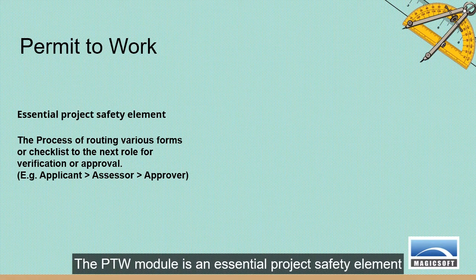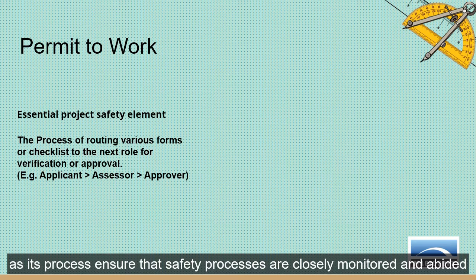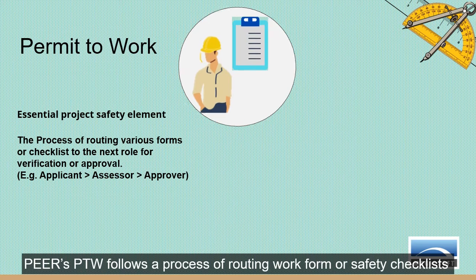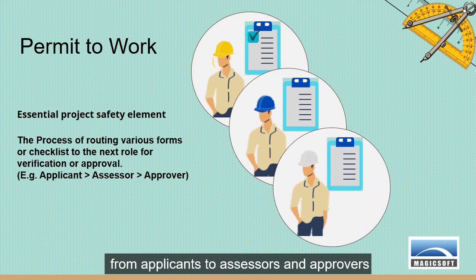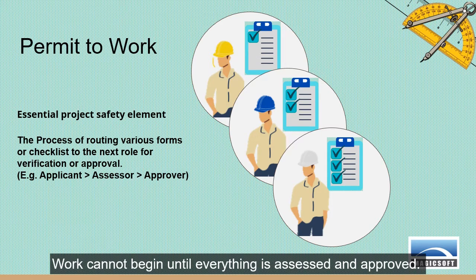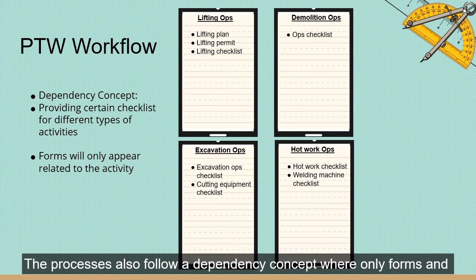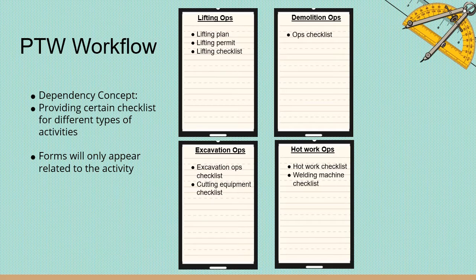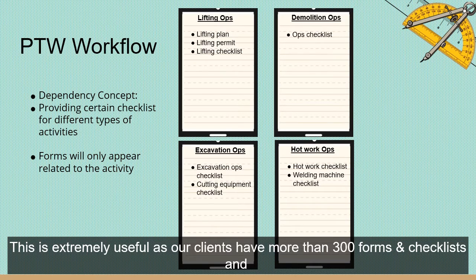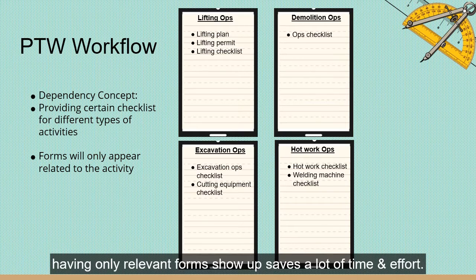The PTW module is an essential project safety element, as its process ensures that safety processes are closely monitored and abided. Peer's PTW follows a process of routing work forms or safety checklists from applicants to assessors and approvers — work cannot begin until everything is assessed and approved. The process also follows a dependency concept where only forms and checklists relevant to the job scope will appear, saving a lot of time and effort.